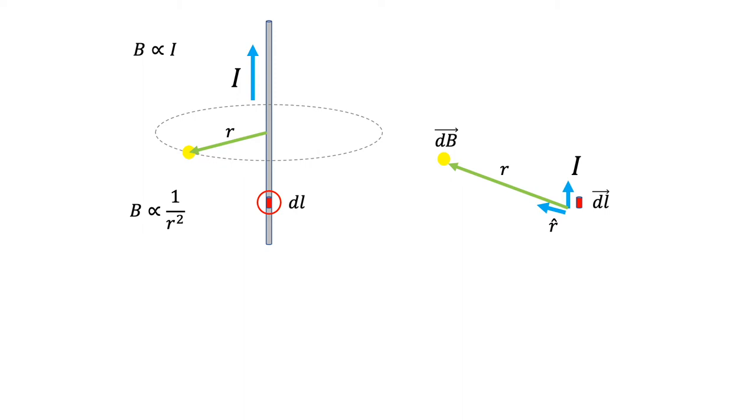The purpose of R hat is just to tell us a direction. That's why we're using R hat instead of a regular vector R. With respect to DL, the direction of this magnetic field by convention is DL cross R hat. Using right-hand rule, you point your thumb along the first term, which is DL, and your fingers along R hat. When you bend your fingers perpendicular to current and R hat, that's the direction of the magnetic field.